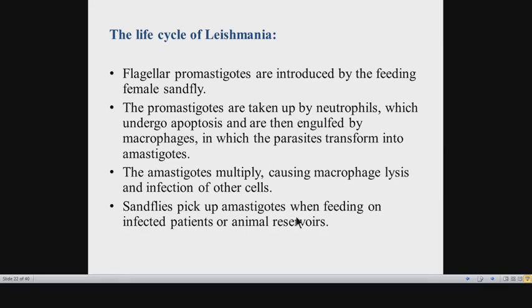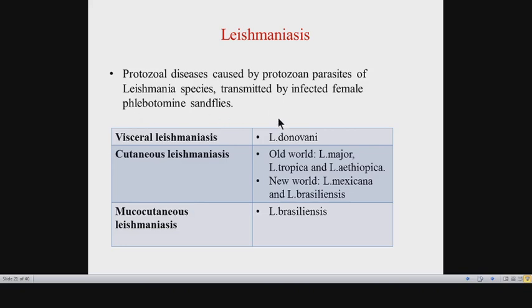The parasites also multiply within the lymph nodes, resulting in generalized lymphadenopathy. Within the bone marrow, they replace normal cellular elements, resulting in bone marrow failure, which worsens the pancytopenia. The reticuloendothelial system — also called the mononuclear phagocyte system — includes macrophages, histiocytes, and dendritic cells, mainly scattered in the liver, spleen, lymph nodes, and bone marrow. That is why these are the key sites of parasite multiplication in visceral Leishmaniasis.